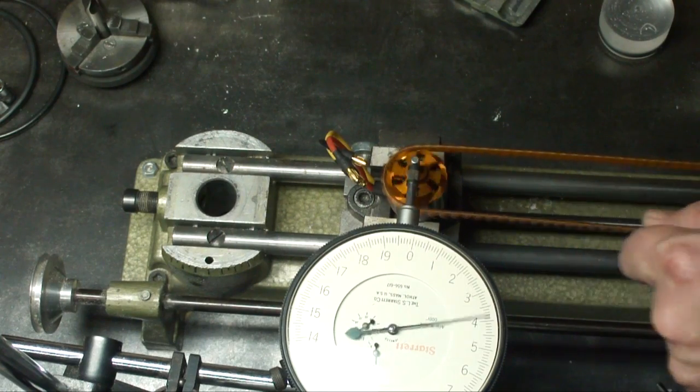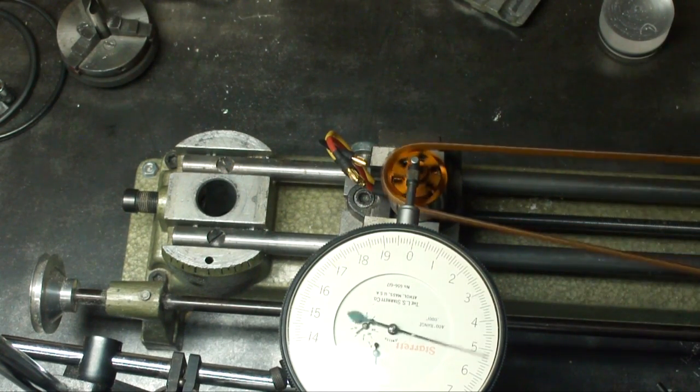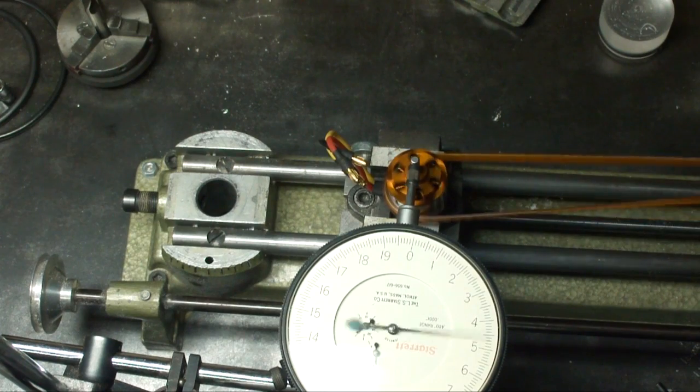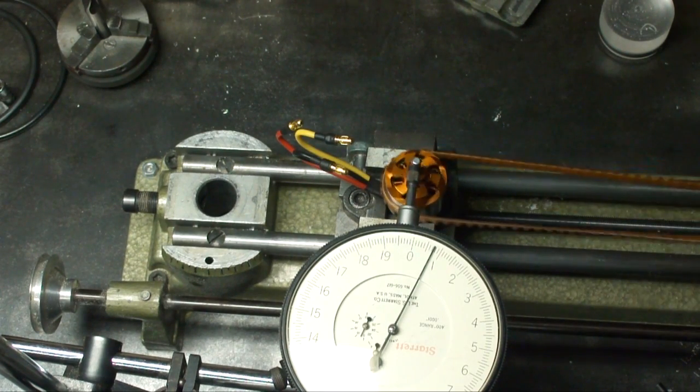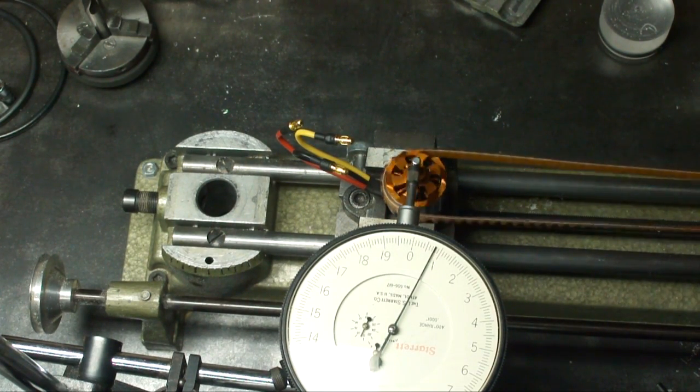As I suspected, it had a bent shaft. I then checked the remaining motors. Here is what a good motor reads on the dial gauge. Zero.